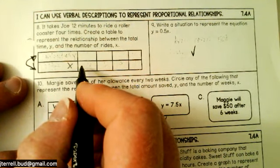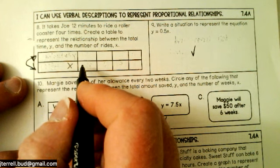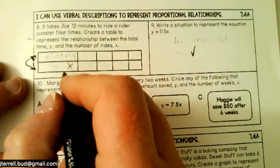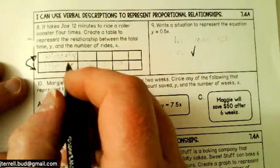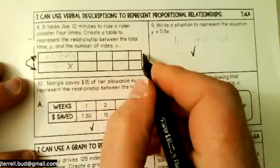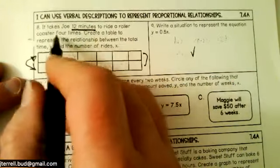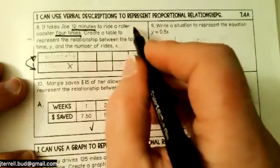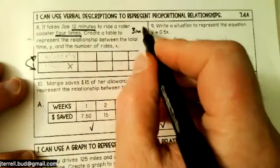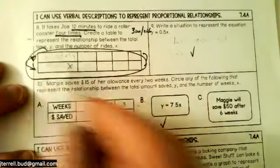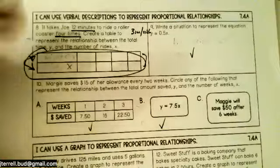You put minutes and ride. So I think you have one minute is three rides. Okay. Which I think it says it is, it takes 12 minutes to ride a roller coaster four times. So it's three minutes per one ride. Okay. And so I think you've got these two mixed up. So watch, watch this because remember it's 12 minutes to go four times. That means it's going to be three minutes per ride.